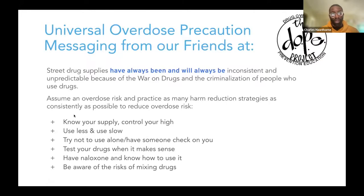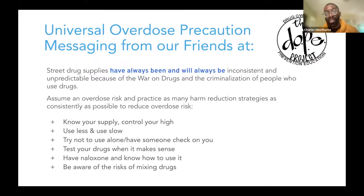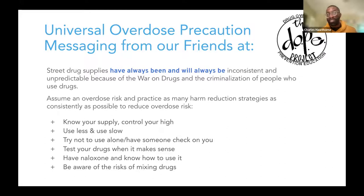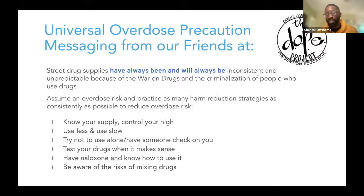These are some good universal precaution messaging — a really great education slide for people working directly with youth. Some multiple tips: knowing where you're getting stuff from, controlling your own high, not letting other people control how much you're using, starting to use less and use slowly, having somebody check on you, testing your drugs, having naloxone and knowing how to use it. All these things will tend to keep people safe when they're using. This is from our friends at the DOPE Project, which used to be where I worked, from the National Harm Reduction Coalition — an awesome overdose prevention program based in San Francisco.